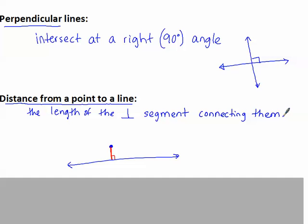So again, in my picture, from the point to the line, I drew a segment that is perpendicular to the line. It is the length of that segment that is the distance. Remember the symbol for perpendicular — the distance from a point to a line, we draw that perpendicular.